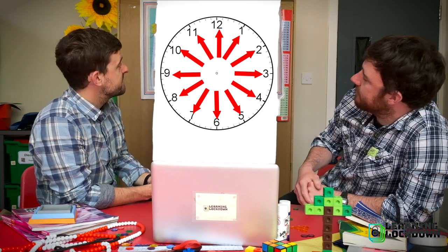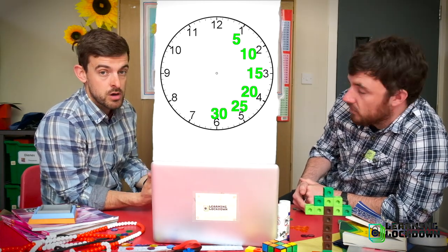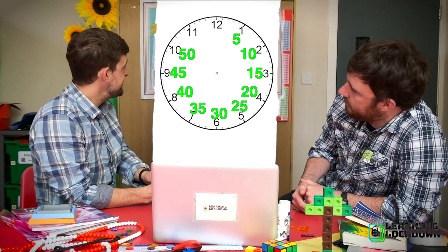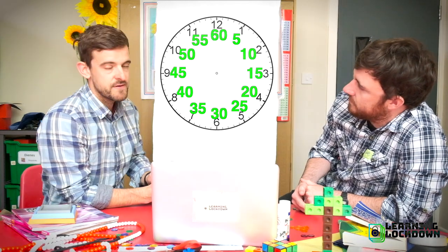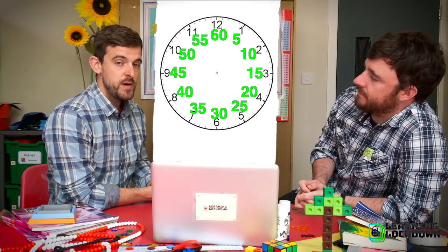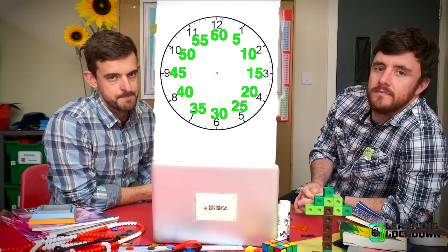If we work our way around the clock we've got 5, 10, 15 or quarter, 20, 25, 30 or half past, 35, 40, 45 quarter to, 50, 55, and finishing off our full hour with 60 minutes. So as our minute hand travels round, if we know how to count in fives we can read a clock far more accurately.